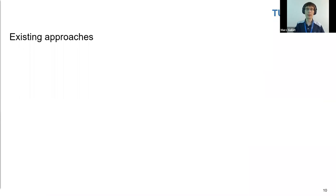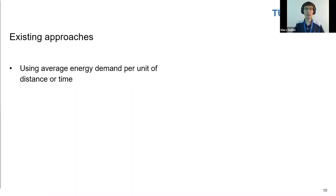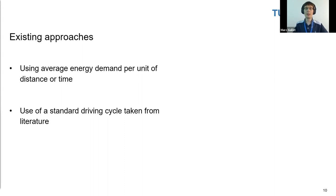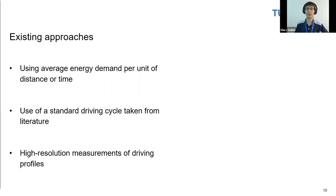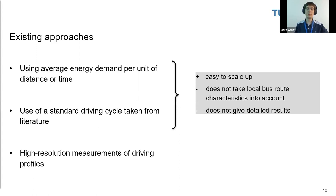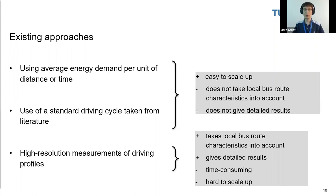Reviewing usual approaches in literature: many studies use average energy demand per unit distance or time and extrapolate by multiplying by bus route distance; others rely on a standard driving cycle from literature; and the lucky ones have high-resolution driving profile measurements. The first two are easy to scale up but cannot account for local characteristics of bus routes and lack detail. The last gives the best and most locally detailed results but is time-consuming to process and hard to scale up to a full city.